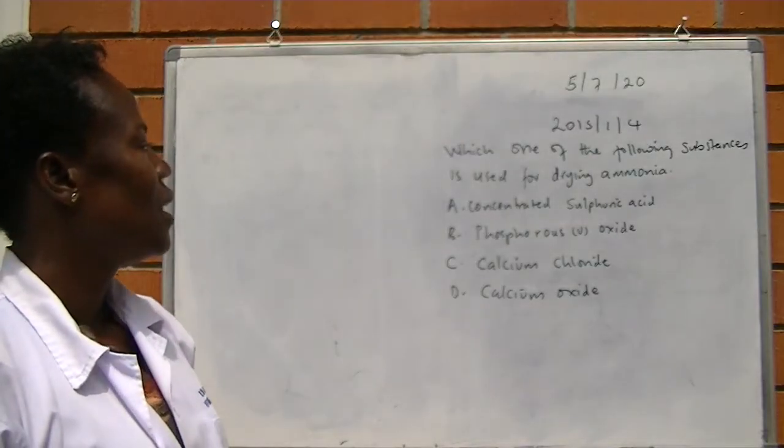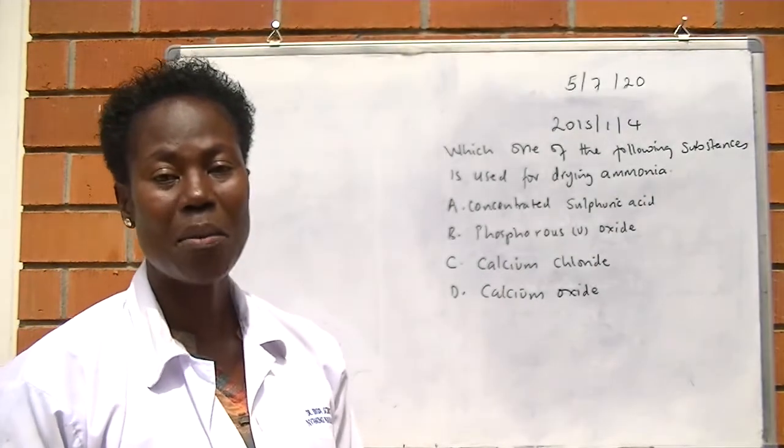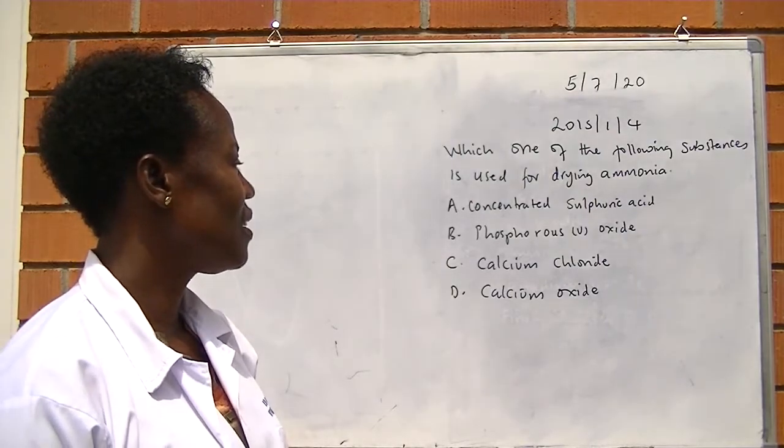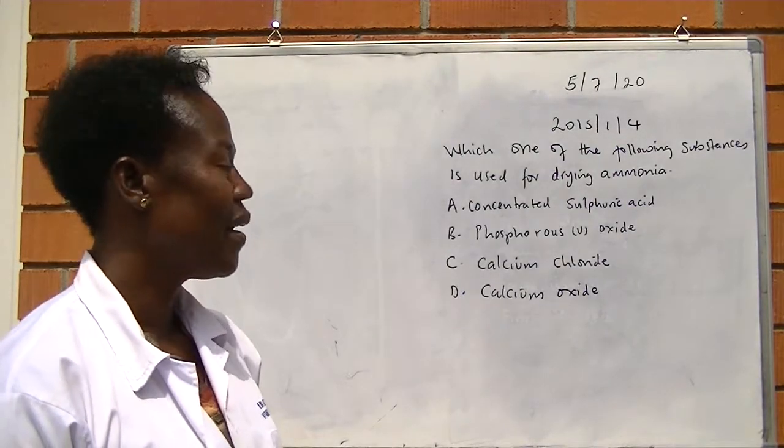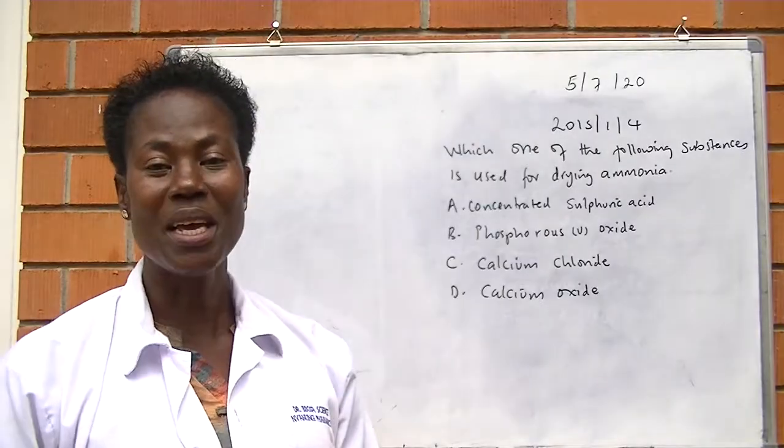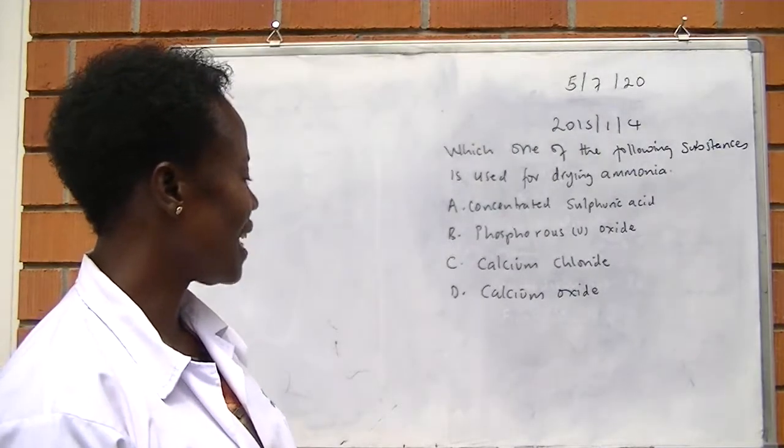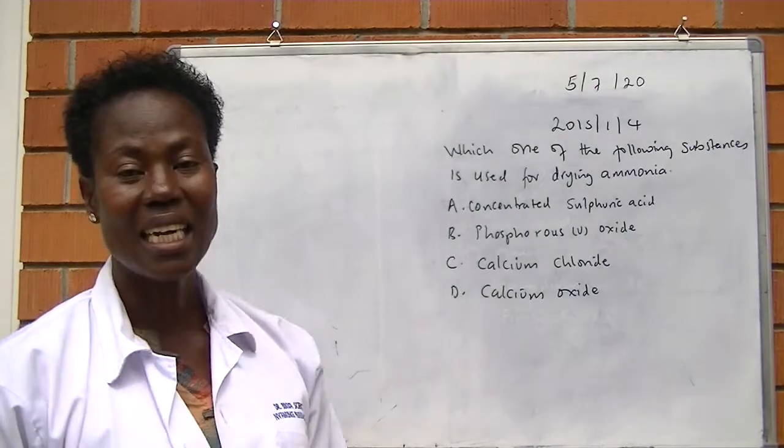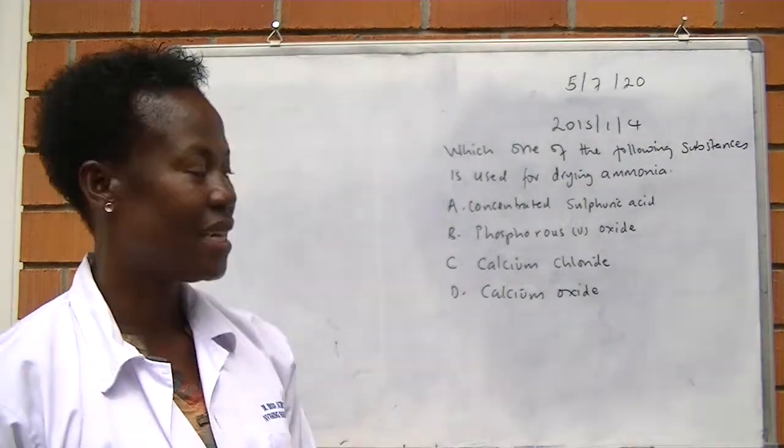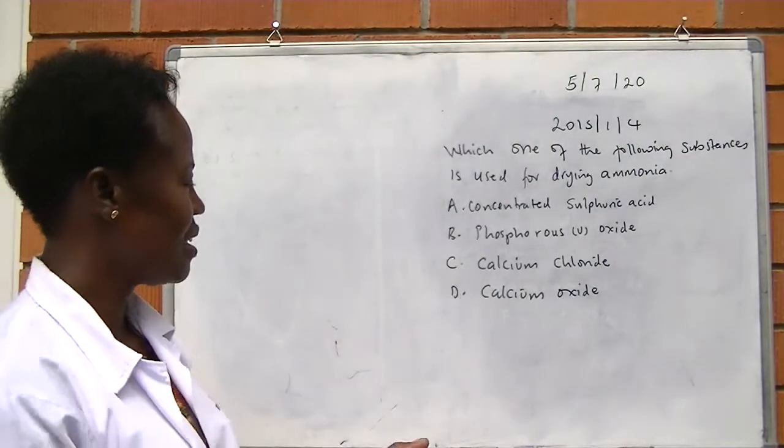2015, number 4, paper 1. Which one of the following substances is used for drying ammonia? A, concentrated sulfuric acid, B, phosphorus(V) oxide, C, calcium chloride, D, calcium oxide. The answer is D.